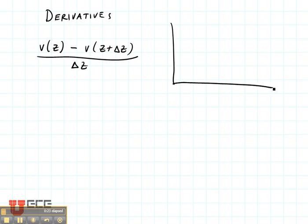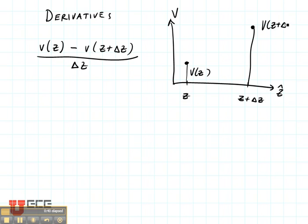Let's look at this graphically. This is our z-axis with a point z and a point z plus Δz. This is our voltage axis, so this point is v(z), and this point is v(z + Δz).